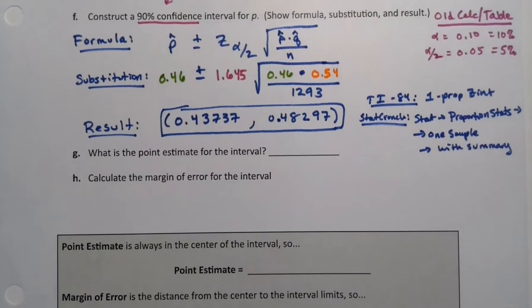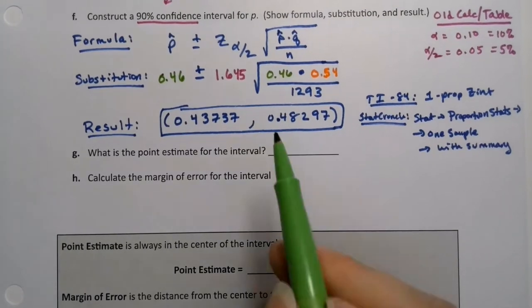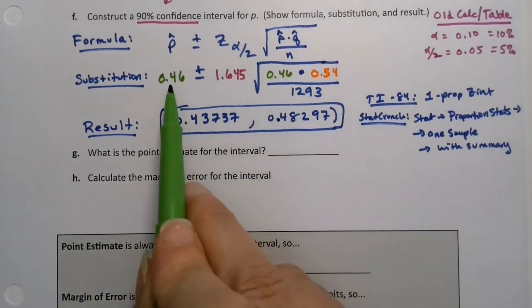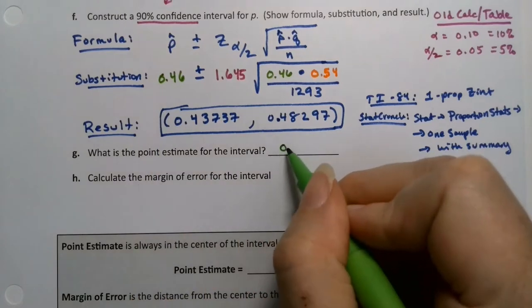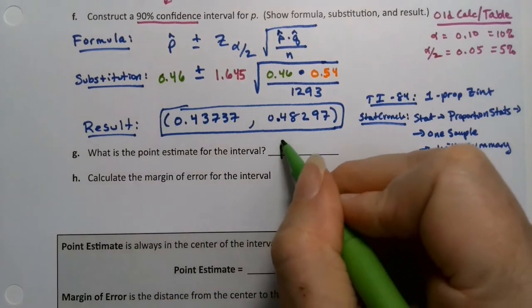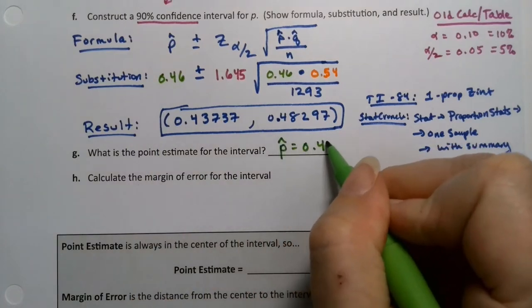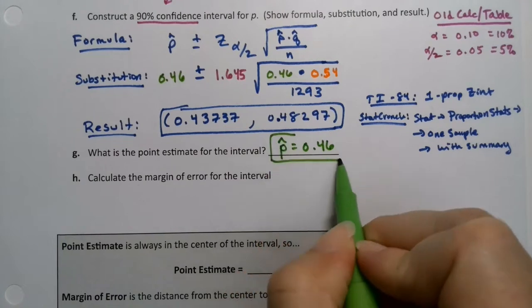What was my point estimate? Well, my point estimate is the center of my interval. So it's 0.46, which is P-hat. That was my point estimate.